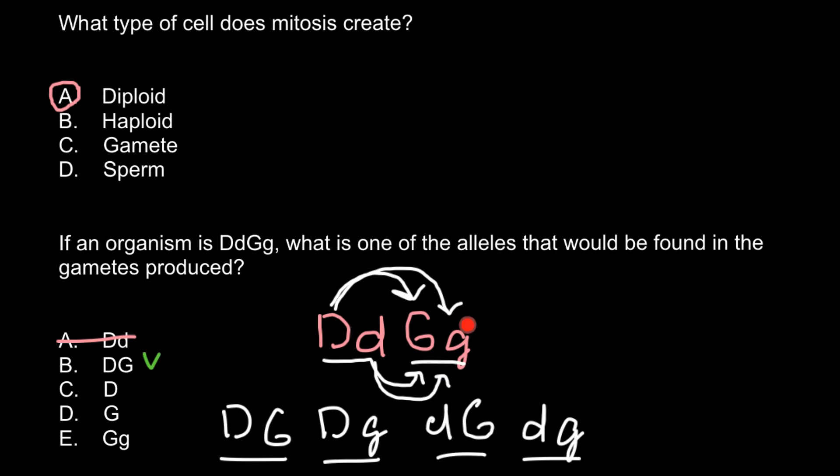Once again, any of the alleles for gene D is missing. So we have to cross out this answer. We have to cross answer D because it only gives one allele of the gene G and another gene is missing.